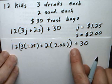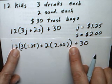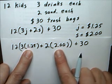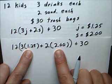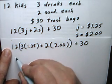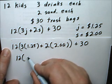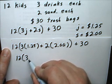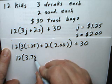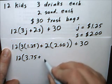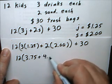According to the PEMDAS rules, I have parentheses to work on, and that's going to be these two operations inside the parentheses. The 12 I'm not ready to take care of yet. Three times a dollar and a quarter is $3.75. Two times two dollars is four dollars.